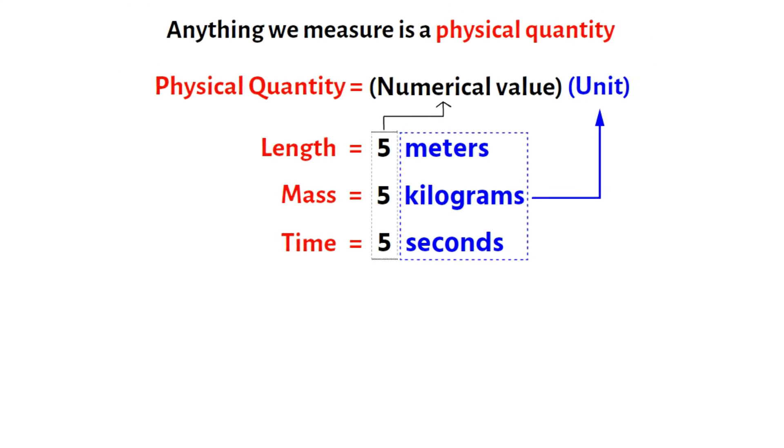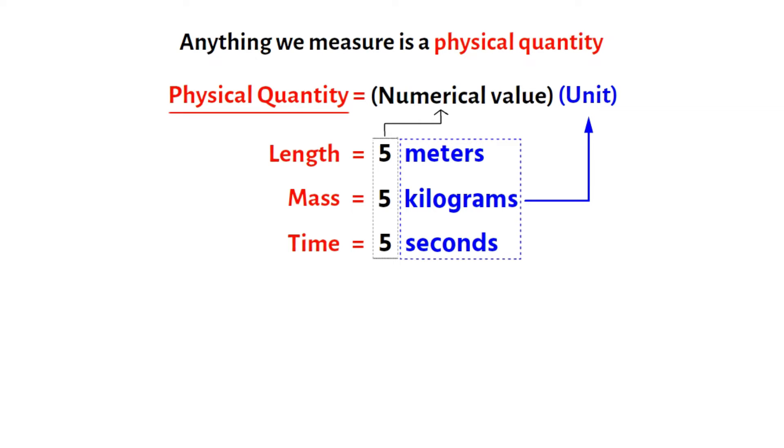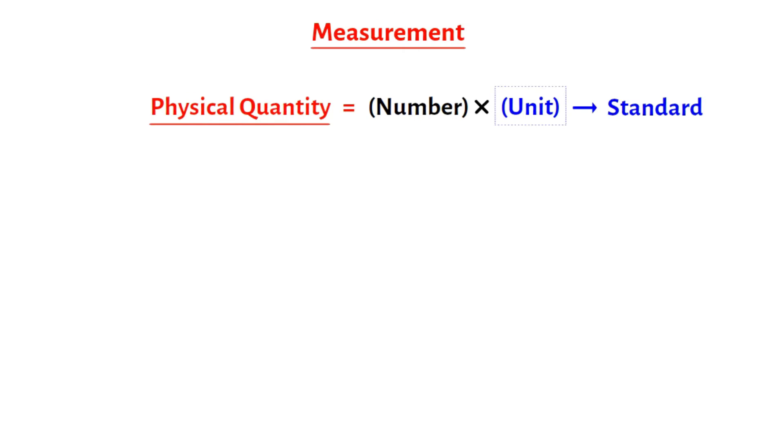However, in order to measure any physical quantity, we have to follow some rules. In the process of measurement, we compare the given physical quantity with the known standard quantity of the same nature. For the measurement of a physical quantity, at first, we consider a constant quantity of the same nature as a standard, then we find the number which expresses how many times the standard quantity is contained in the given physical quantity.